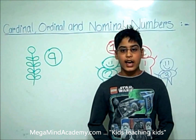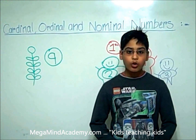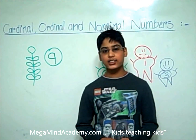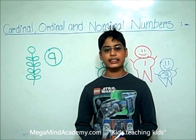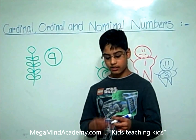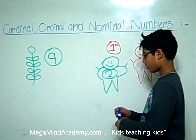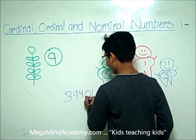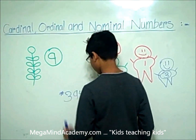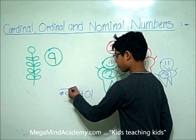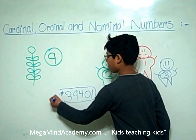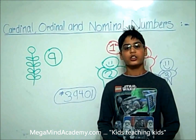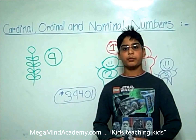In math, a nominal number is a number used only as a name or to identify something. Let's look at a few examples. Let's say the zip code for a certain area is 39401. Here, 39401 is a nominal number.